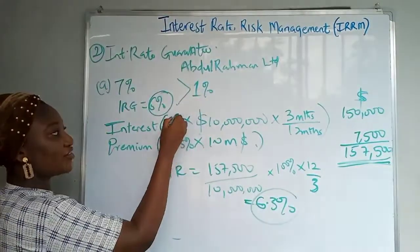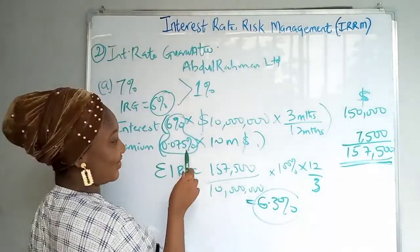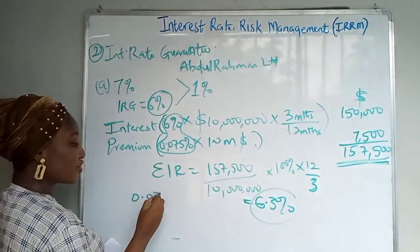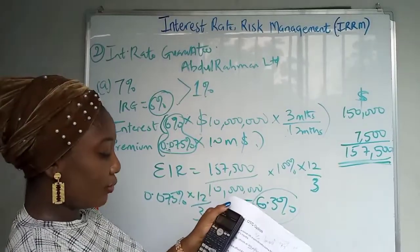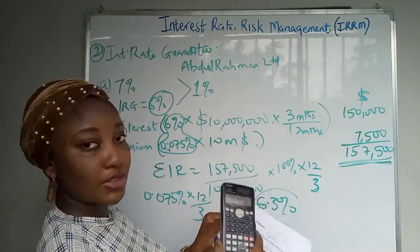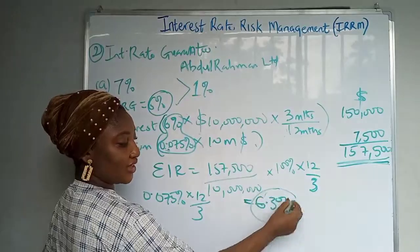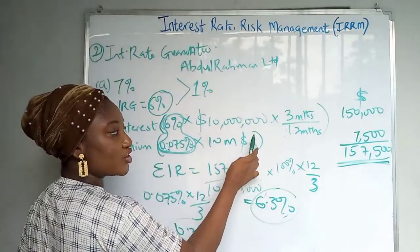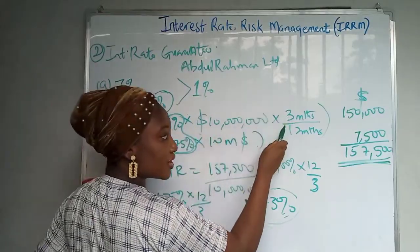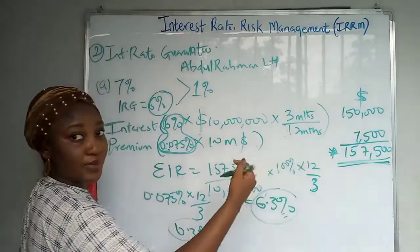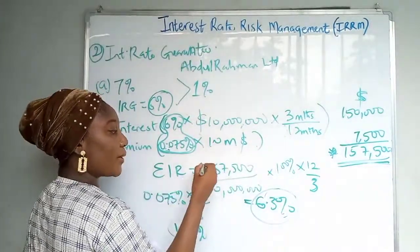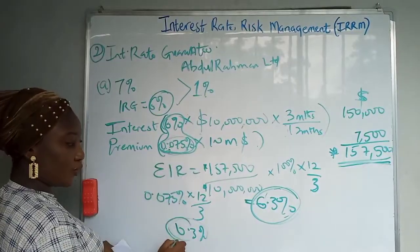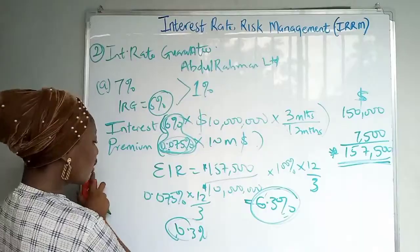If you tried to calculate the effective rate directly from the percentages, it won't give you the right answer because the premium is not prorated the same way as interest. If you prorate 0.075 percent by multiplying by 12 over 3, you get 0.3 percent — which, added to 6 percent, gives 6.3 percent. But this only works here by coincidence. It's better practice to convert everything to actual amounts first, then derive the effective interest rate from the total cost divided by the loan amount.